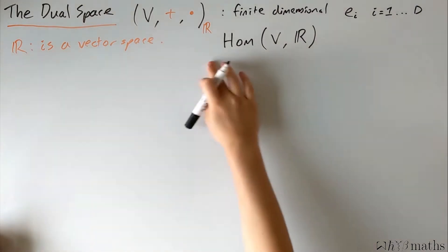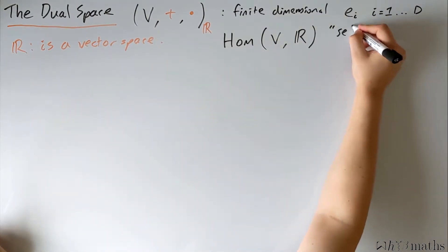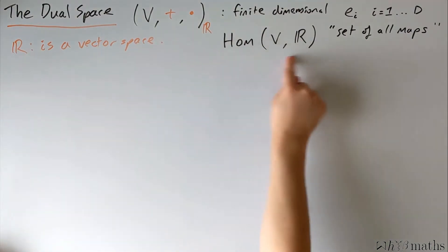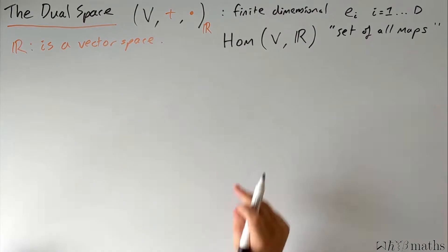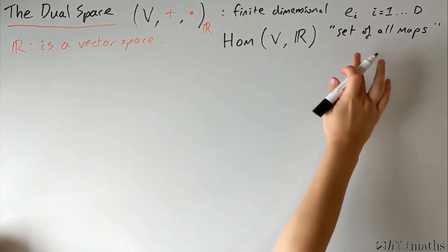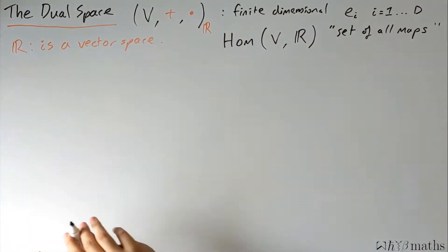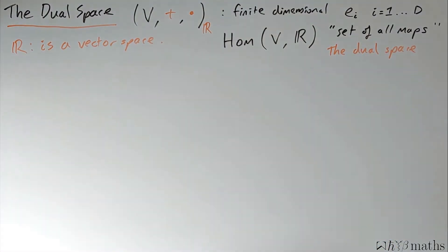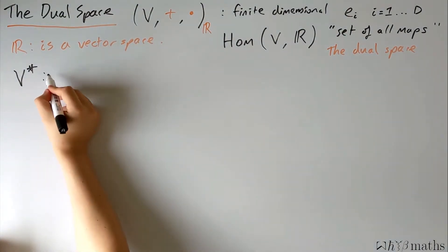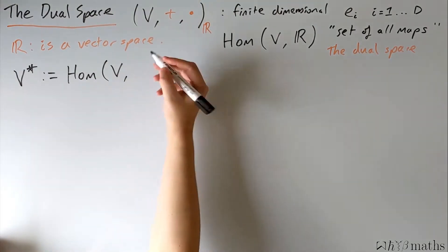This Hom notation stands for the set of all structure-preserving maps, or homomorphisms. But this object is so important that it gets its own name. The set of all maps between the vector space and the underlying field is the dual space, and we give it the notation V star. So V star is defined as the set of all structure-preserving maps between the vector space and the underlying field.